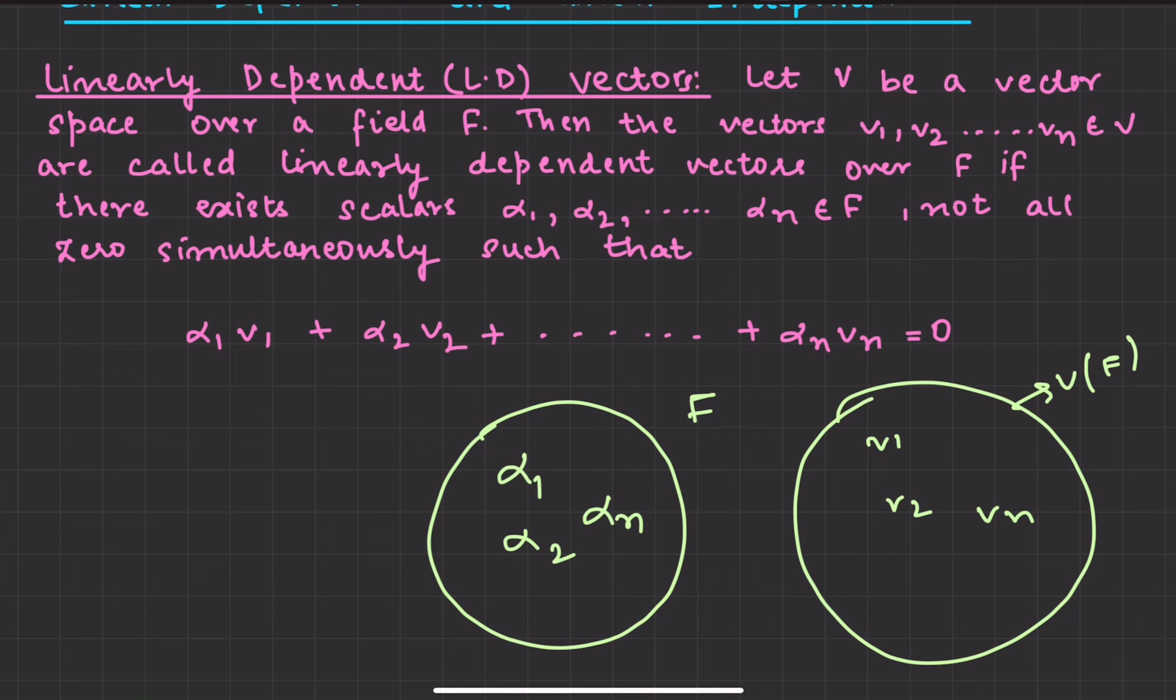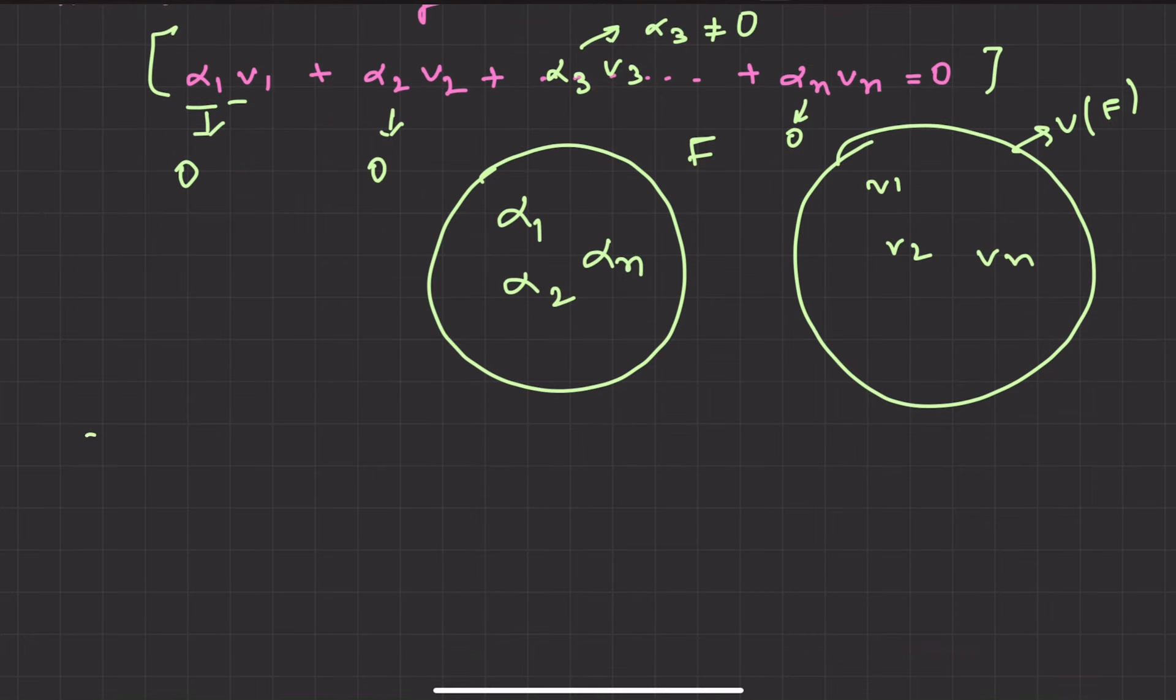The definition is that if all the alphas are not zero, then it is linearly dependent. So here the alphas can be zero, it can be zero, but not all can be zero. If we have scalars and there is at least one non-zero, then all the combinations will be linearly dependent.